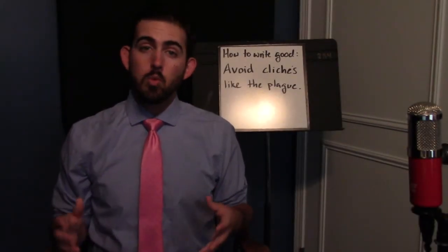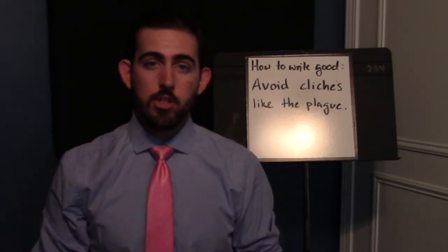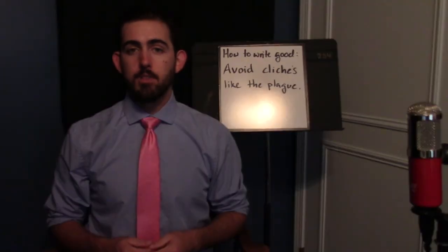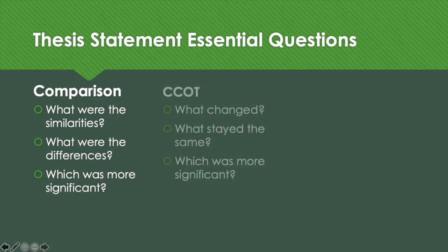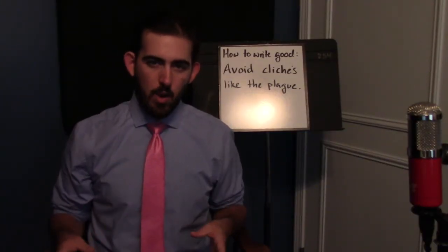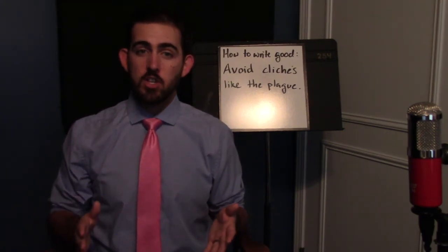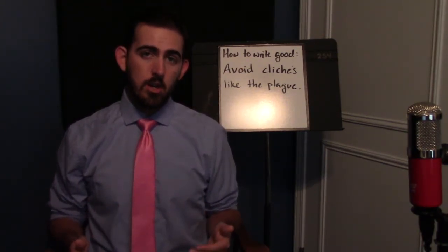In order to ensure that you're meeting all requirements, there are a few essential questions that you can ask yourself as you write your thesis. These should be committed to memory, as they are the surest check to make sure you're earning the thesis point. For a comparison thesis, ask yourself: what were the similarities, what were the differences, and which was more significant? For a CCOT thesis: what changed, what stayed the same, and which was more significant? And for a causation essay: what was the main cause, and what were the secondary causes? If you look at your thesis after writing it and can't clearly see the answers to those questions in your writing, go back to the drawing board. The surest way to earn the point is to answer each of the essential questions in a clear and complete sentence.